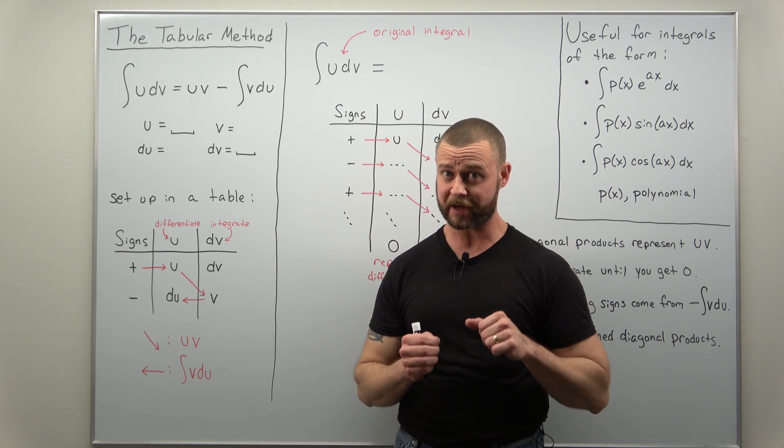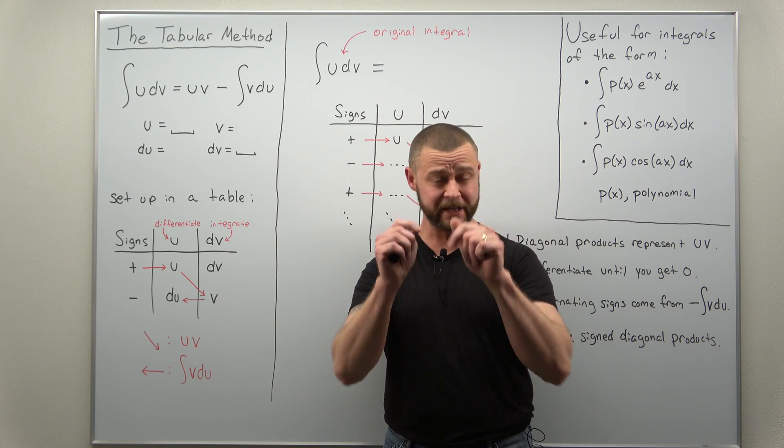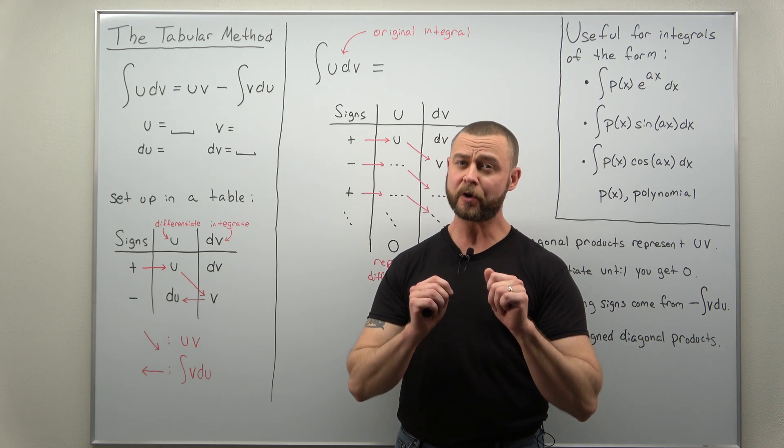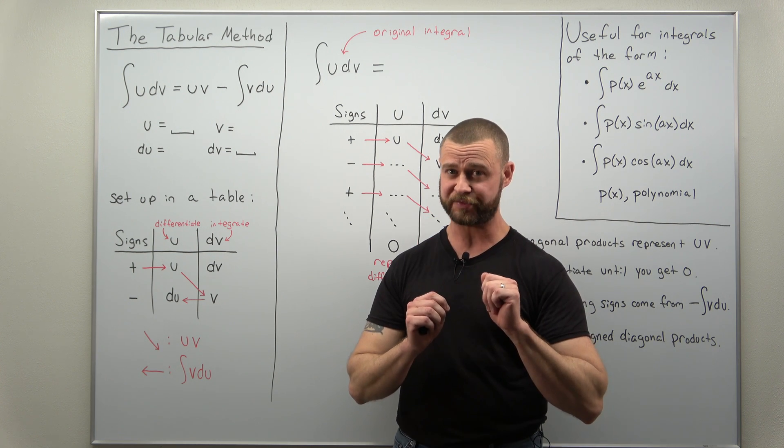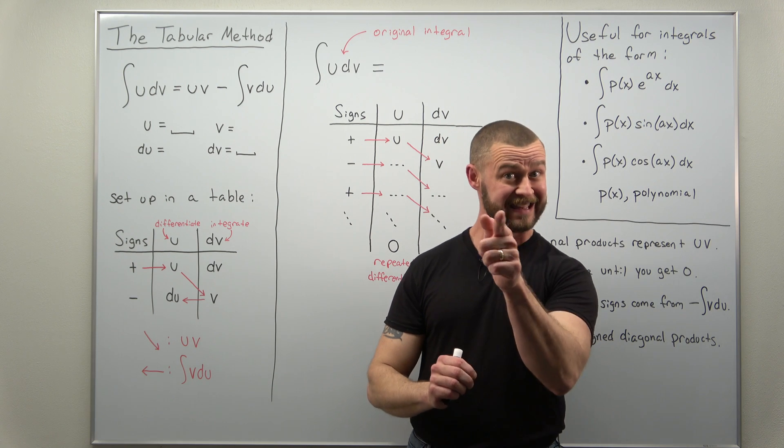Before we get to what this shortcut is, known as the tabular method, the table method, or the DI method, let's make sure you understand the basic integration by parts formula, because we're going to rearrange and repackage it in a table.